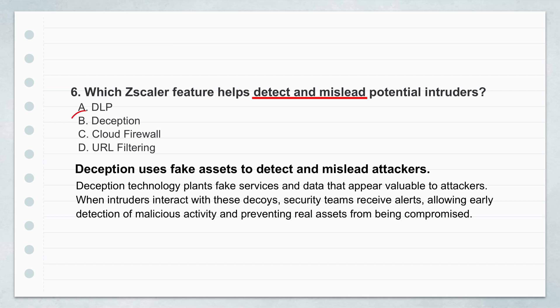Does it take a lot of work to manage these decoys? Can attackers figure out they're fake? Modern deception platforms like Zscaler's are designed to be pretty low maintenance and highly realistic. They use machine learning to blend the decoys into your specific environment and make them look completely legitimate — indistinguishable to an attacker, especially in the early stages of reconnaissance.